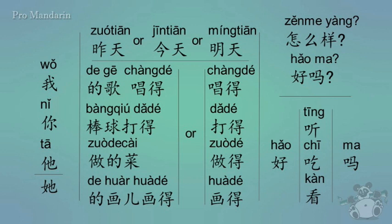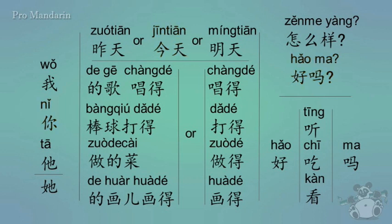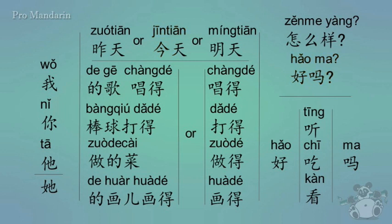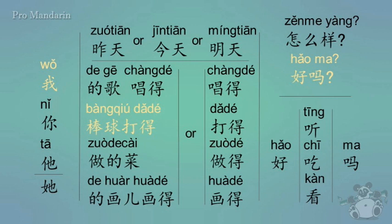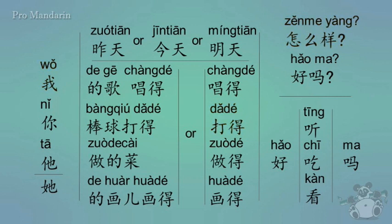Let's do a few more. How would you say 'how are you today'? You can also leave off nǐ since it's already inferred, and just say jīntiān hǎo ma? And one more: how would you say 'am I good at baseball' or 'how am I at baseball'? Wǒ bàngqiú dǎ de zěnme yàng? Or wǒ bàngqiú dǎ de hǎo ma? You can also say wǒ dǎ de zěnme yàng, as long as they already know you're talking about baseball.